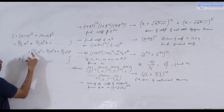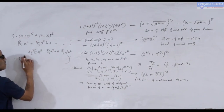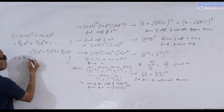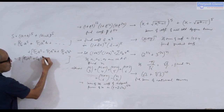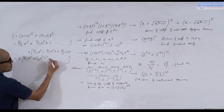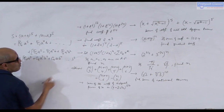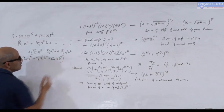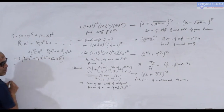After adding, the odd-power-of-b terms cancel out. What remains is 2 times the even-power terms: 2 × [5C0·a⁵ + 5C2·a³·b² + 5C4·a·b⁴]. So the surviving terms have binomial coefficients C0, C2, and C4. Now we substitute the values of a and b.